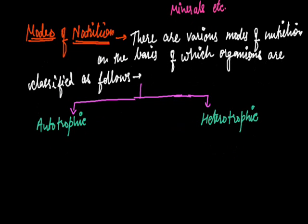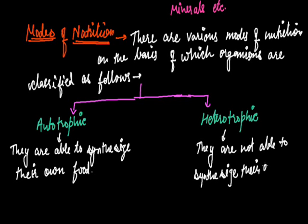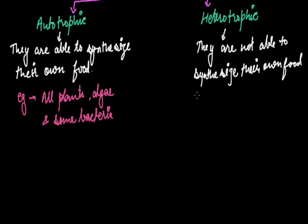In autotrophic mode of nutrition, organisms are called autotrophs, and they are able to synthesize their own food. In heterotrophic mode of nutrition, they cannot synthesize their own food. For example, all plants and algae have autotrophic mode of nutrition, while animals and fungi have heterotrophic mode of nutrition.